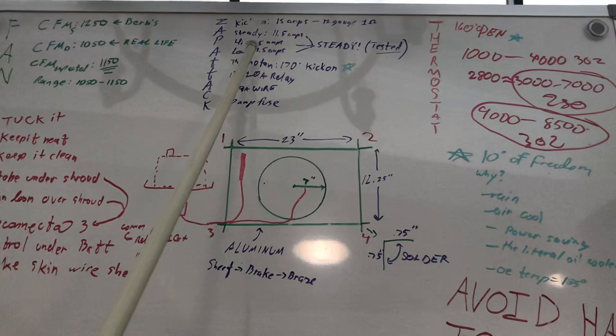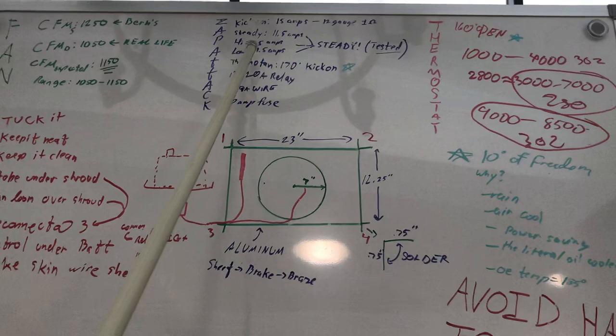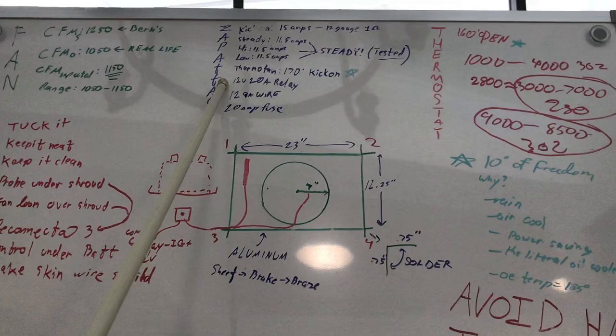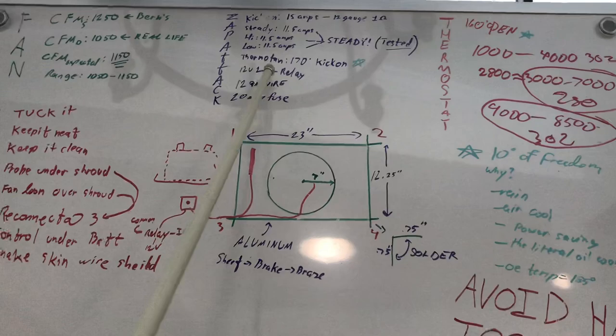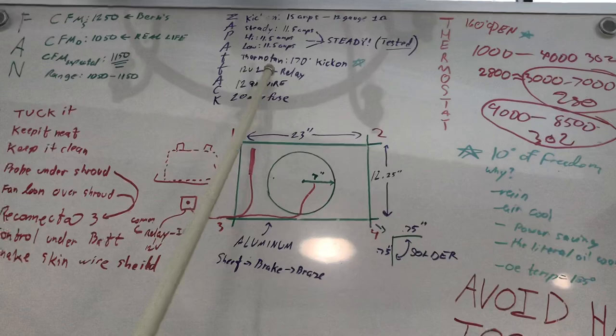Steady, this will always be listed on the box. Steady high, low, it's all 11.5 amps. I always put tested because that's what's written on the box. You're going to choose where you want your thermostat to kick on, and I have a little star by that, we'll get to those later. But I chose 170 degrees. Here's the amp out or amp the relay I want to use, here's the gauge wiring I'd like to use, and here's the fuse I'd like to use. Always try to match the fuse with the relay.